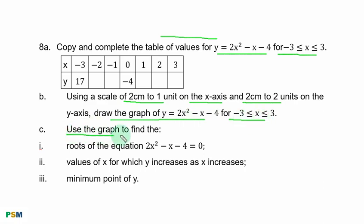C. Use the graph to find: Roman numeral 1, roots of the equation 2s squared minus s minus 4 equal to 0; Roman numeral 2, values of s for which y increases as s increases; Roman numeral 3, minimum point of y.